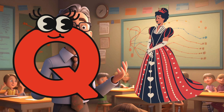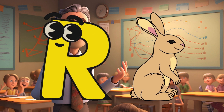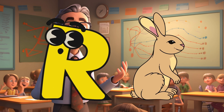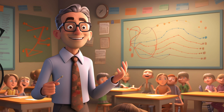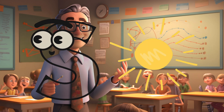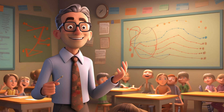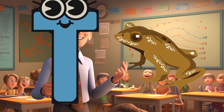Q is for Queen. Q-Q-Queen. R is for Rabbit. R-R-Rabbit. S is for Sun. S-S-Sun. T is for Toad. T-T-Toad.